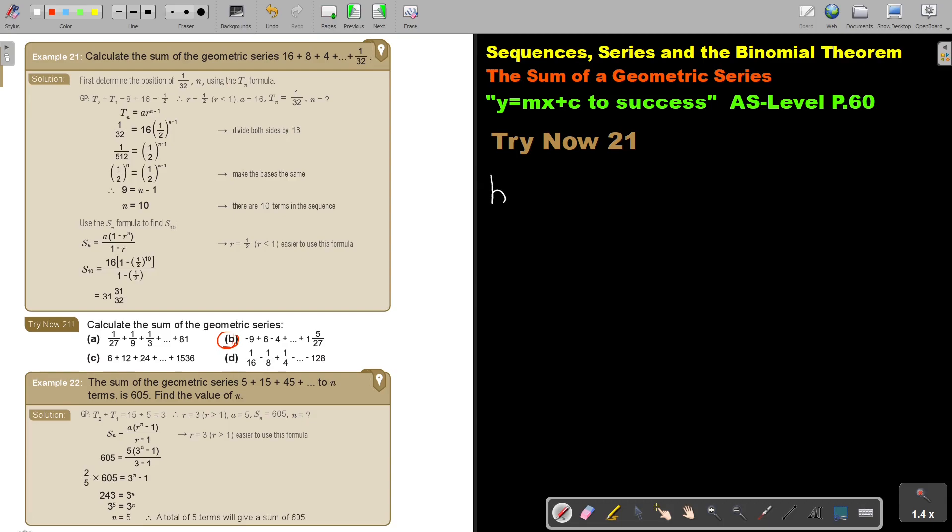Let's start. Number B. So this is negative 9 plus 6 minus 4 plus, plus 1 and 5 over 27. Let's see what do I have. I have A, and what is the value of A? That is going to be negative 9. I know it's a GP, so I can find the value of R.